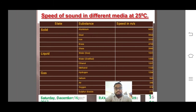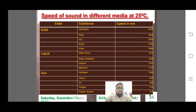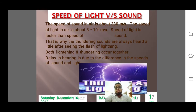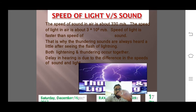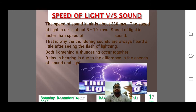We also discussed the various speeds of sound in different mediums at 25 degrees Celsius — in solids, liquids, and gases. We also discussed speed of light versus sound. The speed of sound in air is about 330 metres per second, but the speed of light is much higher. So when there is thunder, we first see the lightning and then we hear the sound, because light travels faster than sound.